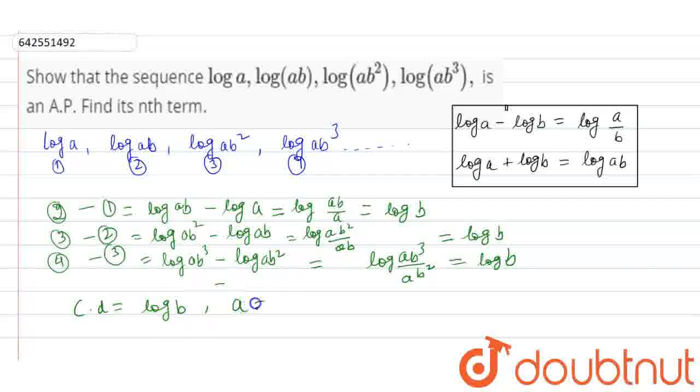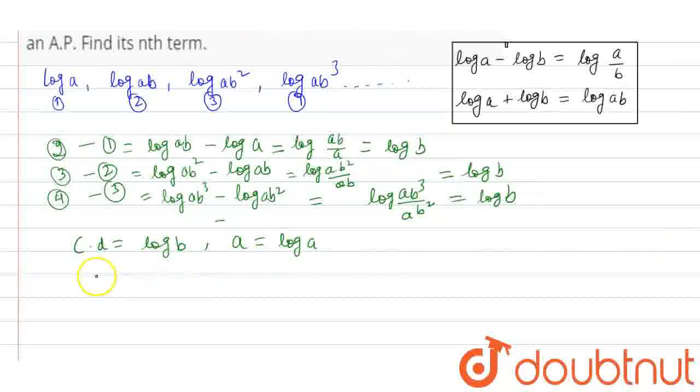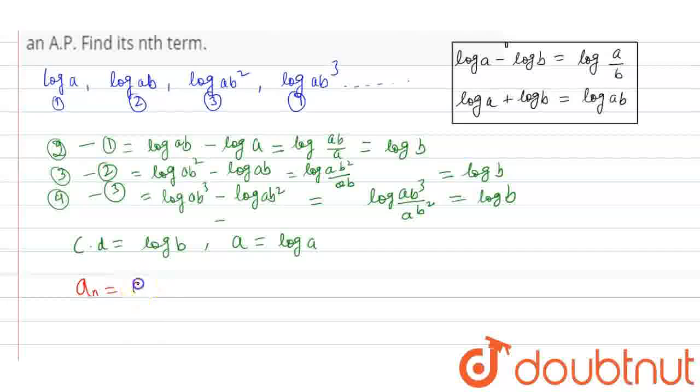The common difference is log b and a is log a. Now we'll write the nth term: aₙ = a + (n-1)d. Here a is log a and d is log b.